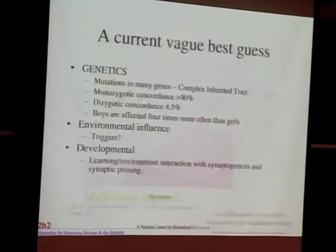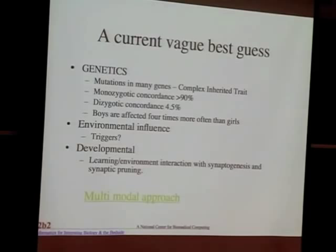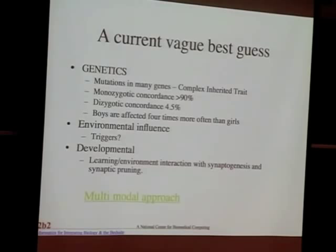Currently, the best understanding is that autism is a complex trait involving mutations in many genes with a strong inherited component. If you're a monozygotic twin, your chance of having autism is greater than 90%. Dizygotic twins have a concordance of 4.5%, which tells you that environment also plays a role. Siblings have about a 3% rate. In closer probing of families, there are far more multiplex families than previously thought — where one subtree has a child with autism and another has an adult with autism.